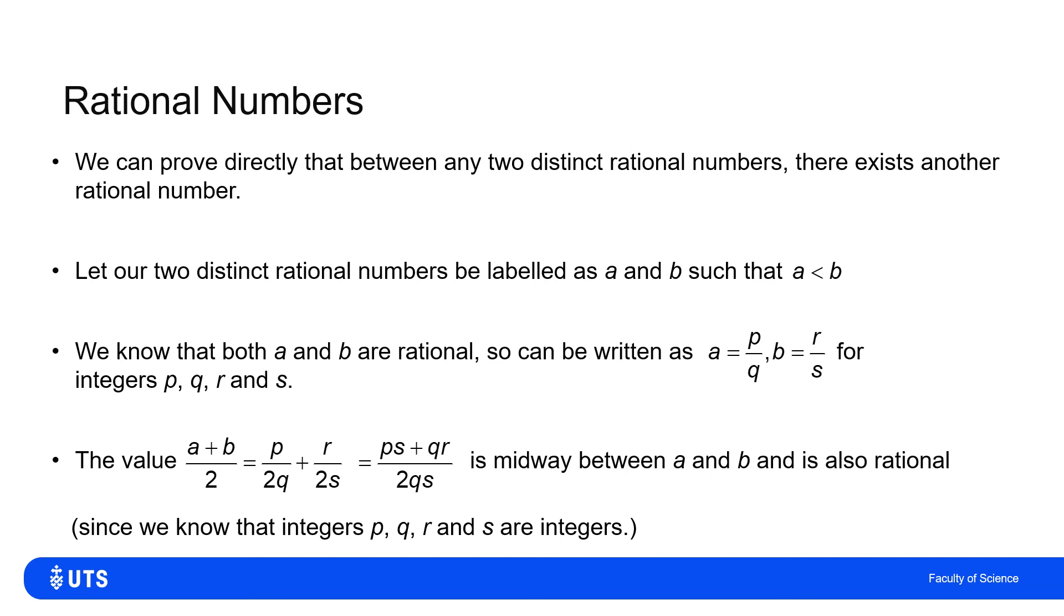So any two rational numbers will have a point in the middle of them, which is also a rational number. So, of course, if I then pick that midpoint and either endpoint, there's another one in the middle of that, and another one in the middle of that, and another one in the middle of that. That it doesn't matter how close A is to B, there will always be an infinite number of rational numbers between my two endpoints. And that's an infinite number of rational numbers.